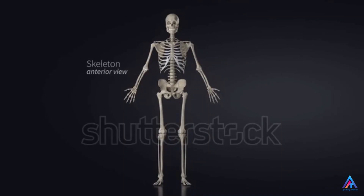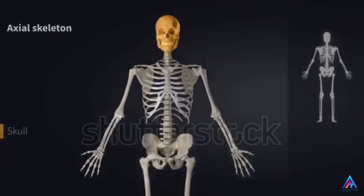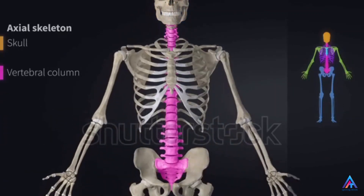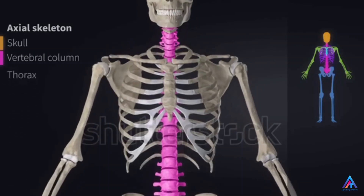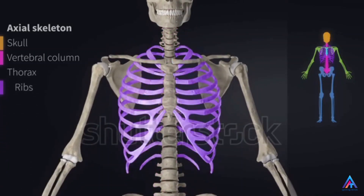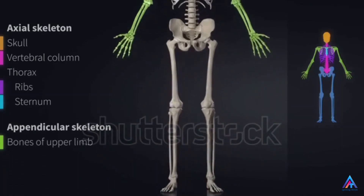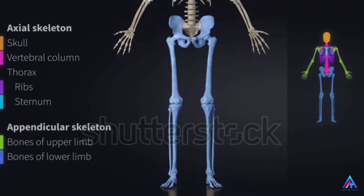This video is basically to make you understand what are the bones found in the axial skeletal system. Here you can see the skull which is getting highlighted, then the vertebral column which is also getting highlighted now. The thorax consists of the ribs and the sternum. These are the parts of the axial skeletal system. Now we will go to the appendicular skeletal system which consists of the bones in the upper limbs and the bones in the lower limbs.